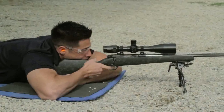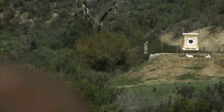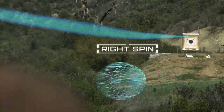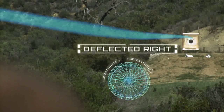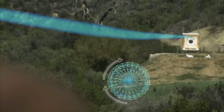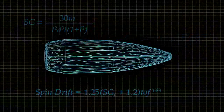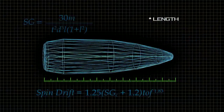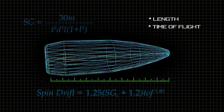If the barrel has a right-hand twist, the bullet has a right-handed spin and is deflected toward the right. If the barrel has a left-hand twist, the bullet has a left-handed spin and is deflected toward the left. The amount of drift is dependent on bullet length, flight time, and spin rate.